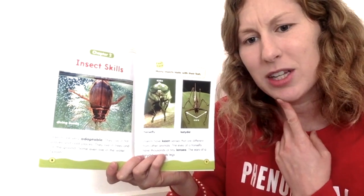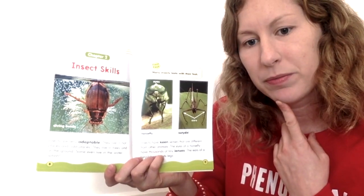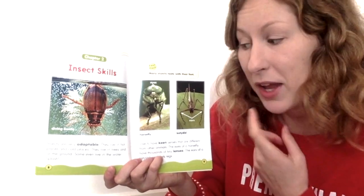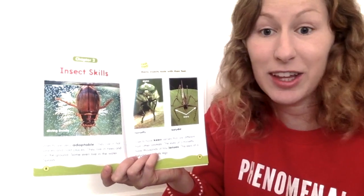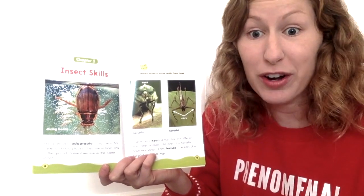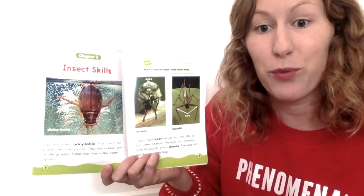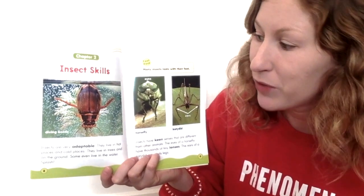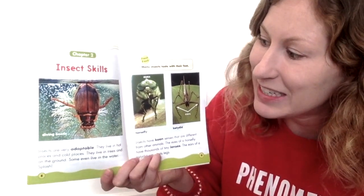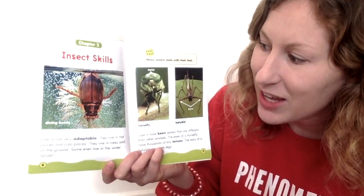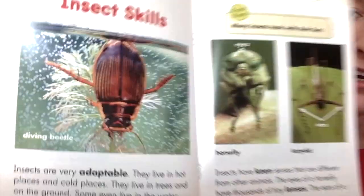Did that give me the definition of adaptable? It told us that insects can live wherever because their body can change based off of where they live. Right here looks like an adaptable insect — it's called a diving beetle.